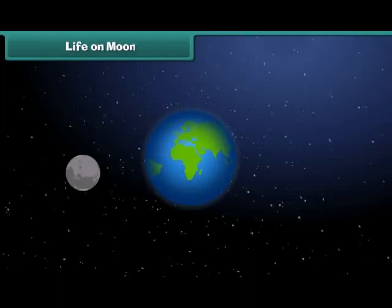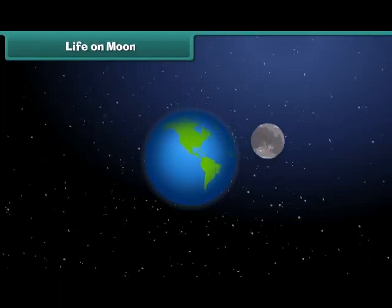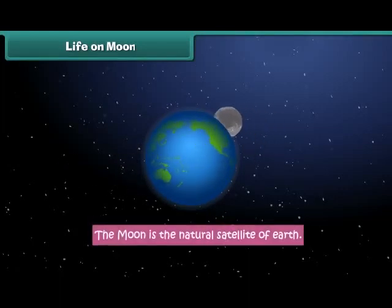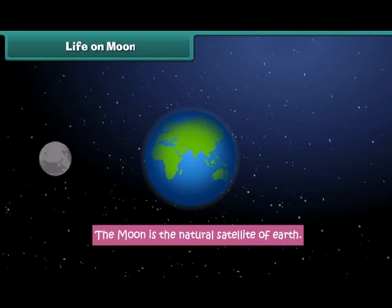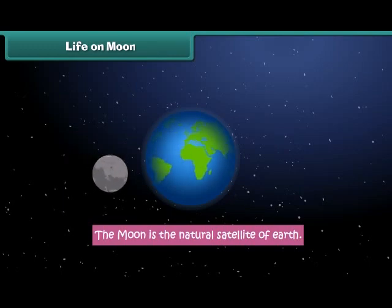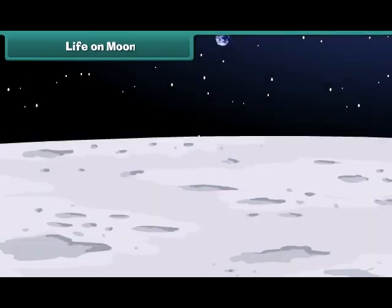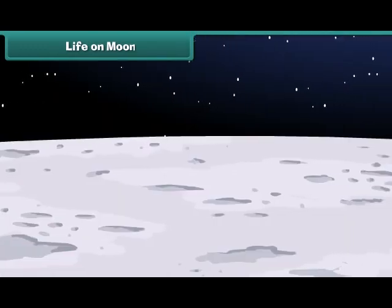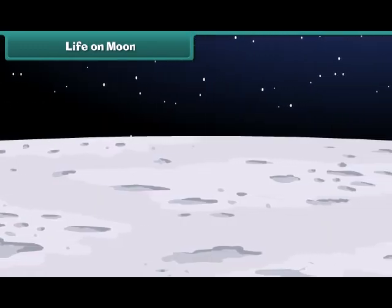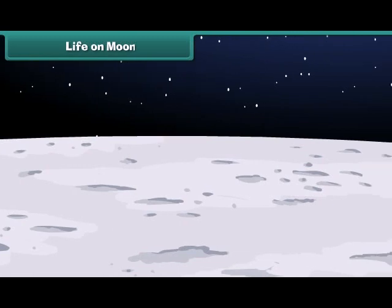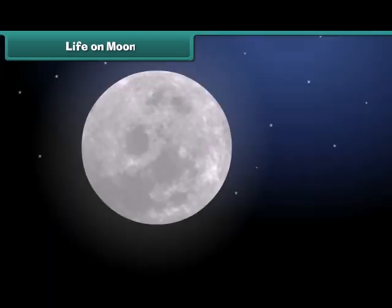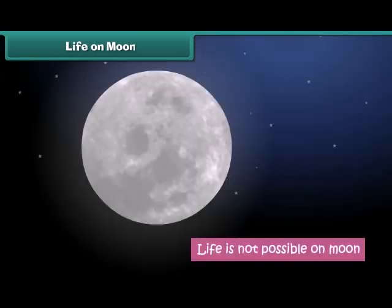Life on moon: Though the moon is the natural satellite of Earth, it is very different from Earth. There is no air, water, or food on the moon. Therefore, life is not possible on it.